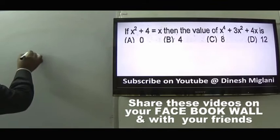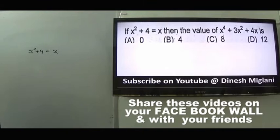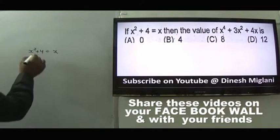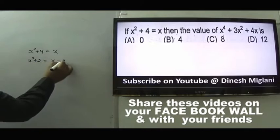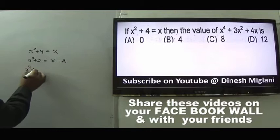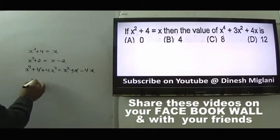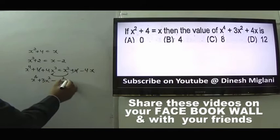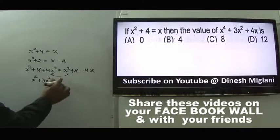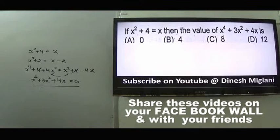Question 18: Given x² + 4 = x, find the value of the expression. Taking (x² + 2) and (x - 2), squaring both sides leads to the expression being equal to 0. Hence answer is A, 0.